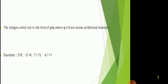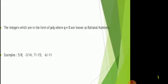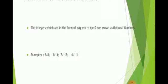Rational numbers, the integers which are in the form of p upon q, where q is not equal to 0, are known as rational numbers. For example, 5 upon 8, minus 6 upon minus 11.